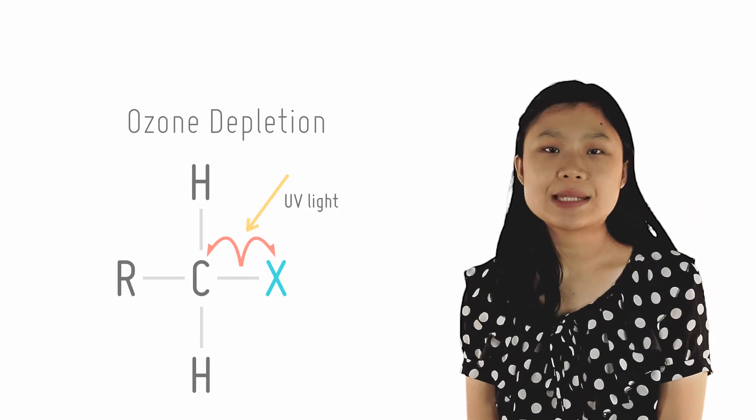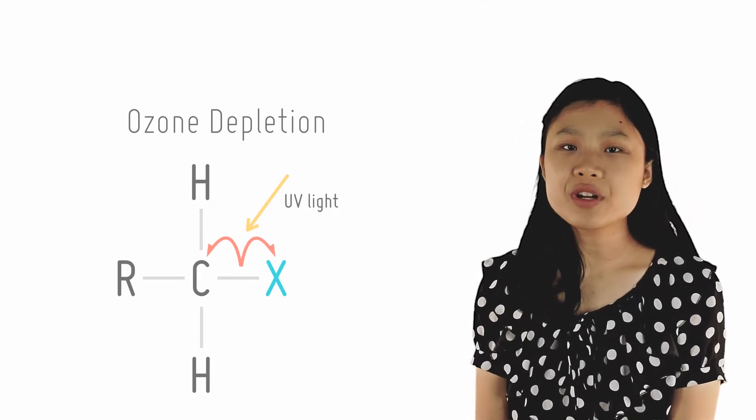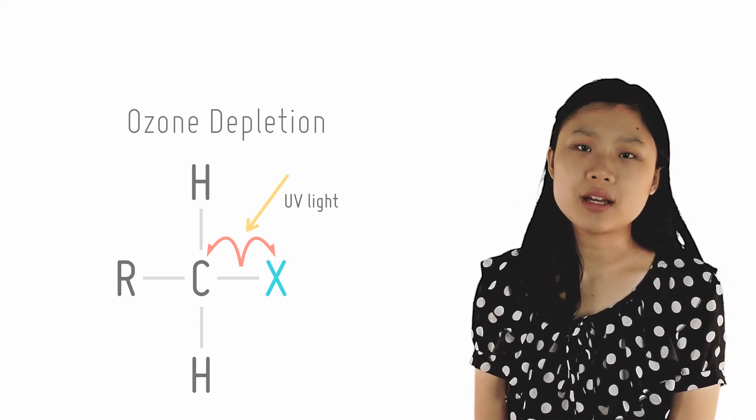UV light in the upper atmosphere splits up the C-Cl bond and forms Cl radicals, which then interrupts ozone molecules to form oxygen molecules, thus destroying the ozone layer.